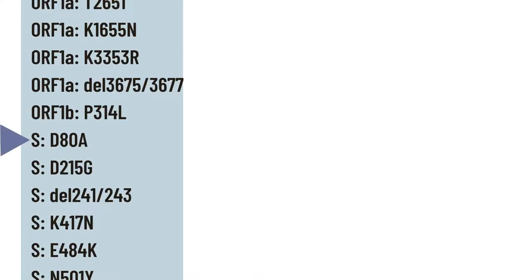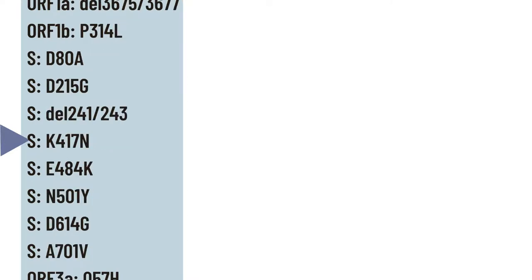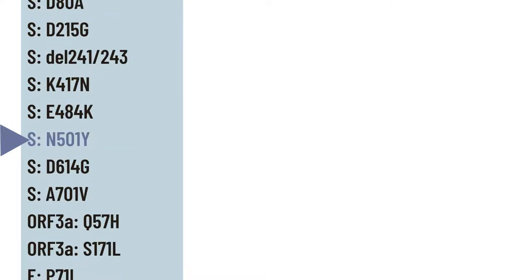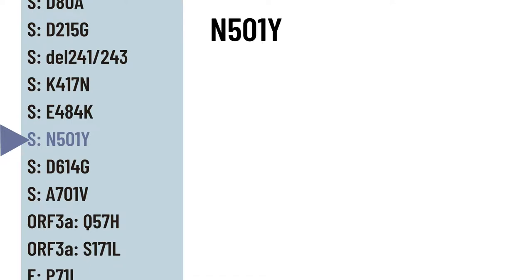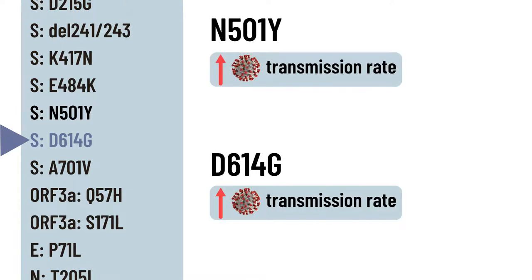From the list of mutations on the spike protein, a few have been extensively studied to understand their impact. The most notable examples are the N501Y and D614G mutations, which are common in other variants of concern including the alpha and gamma variants. The N501Y mutation is the main cause of the increase in transmission rate of the virus, which led to spikes in COVID-19 cases. To know more about the impacts of N501Y and D614G, feel free to watch the video for the alpha variant on this channel.